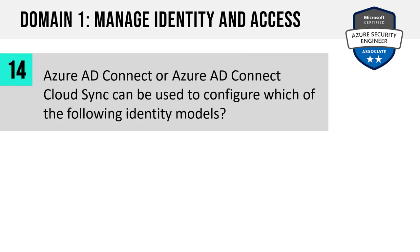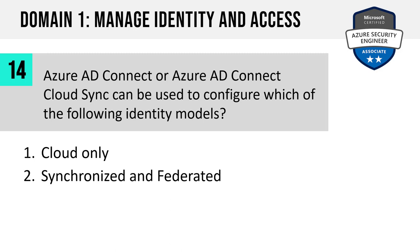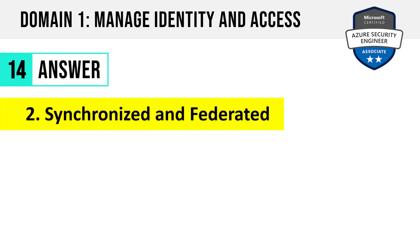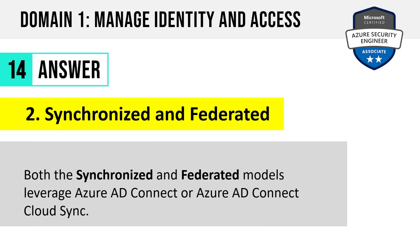Question 14. Azure AD Connect or Azure AD Cloud Sync can be used to configure which of the following identity models? Cloud only, synchronized and federated, synchronized only, or all of the above? The answer is synchronized and federated. Both the synchronized and federated models leverage Azure AD Connect or Azure AD Connect Cloud Sync. Azure AD Connect Cloud Sync is simply a cloud service version of Azure AD Connect, which historically we've installed on-premises in a VM.